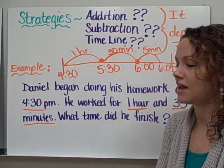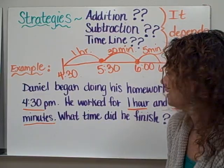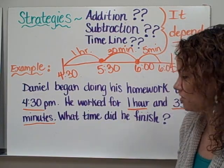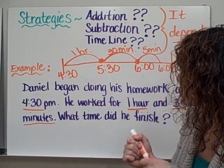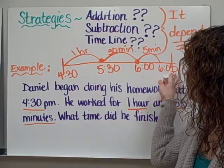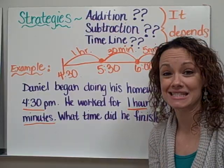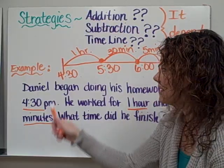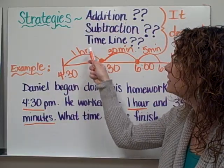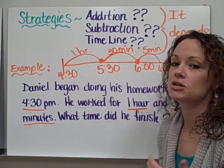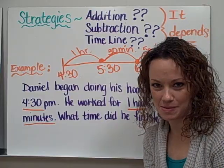And we've now answered our question. If Daniel begins doing his homework at 4:30 and he works for 1 hour and 35 minutes, he will end at 6:05. My timeline clearly shows that I'm understanding how this time is passing.